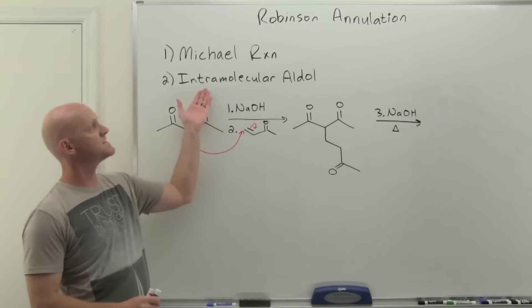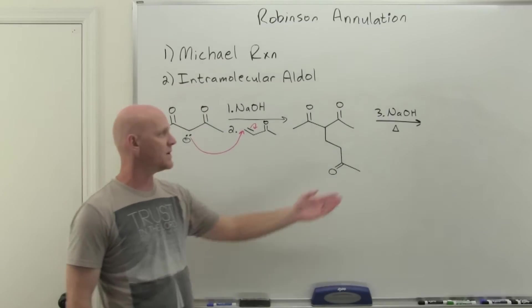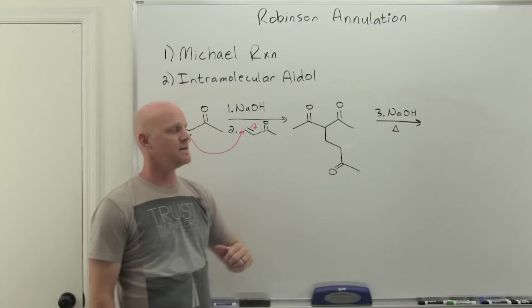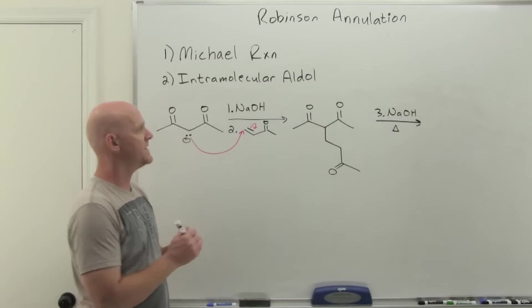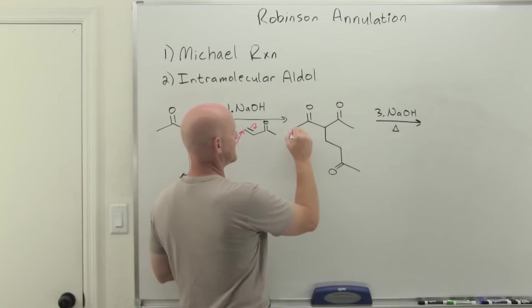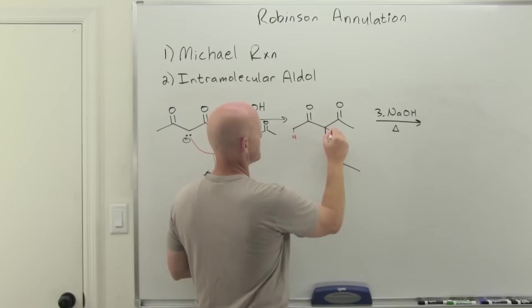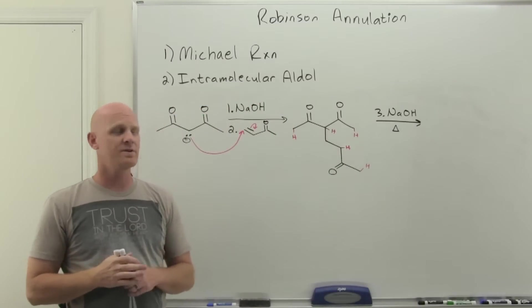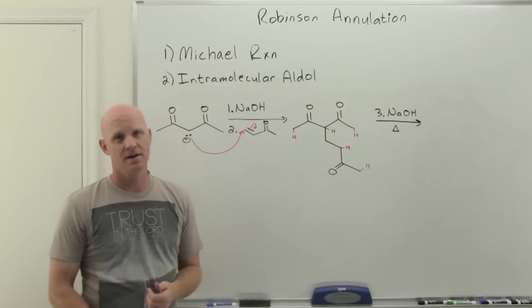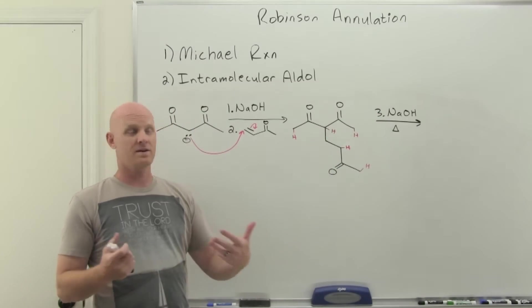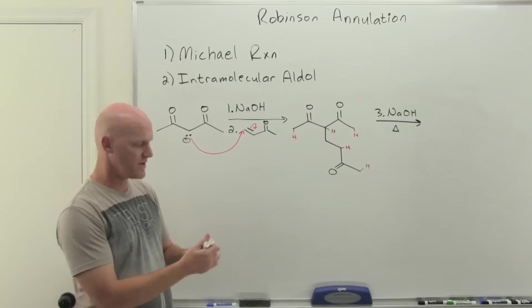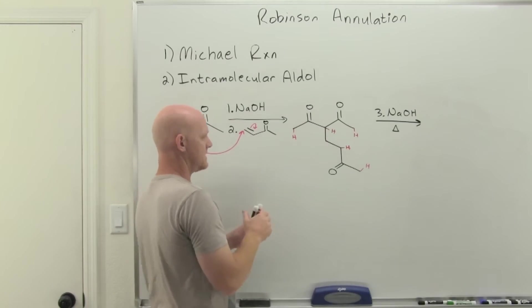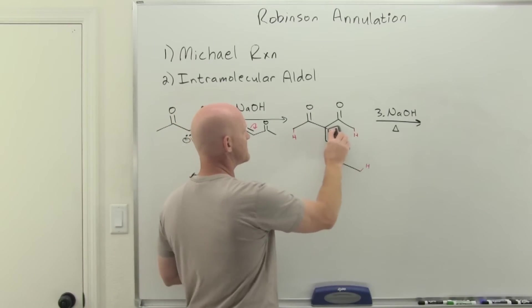So there's the end of our Michael reaction, and then we've got to consider step two here: an intramolecular aldol. When we add sodium hydroxide with heat, in this case we've got several enolizable hydrogens in a lot of different locations here. We've got enolizable hydrogens here, here, here, and here. So lots of different enolizable hydrogens that the sodium hydroxide could deprotonate to form the enolate anion that could then attack one of the other ketones in the molecule. So the most likely one, the most acidic one, is this guy right here. So if we deprotonate him and consider that first.